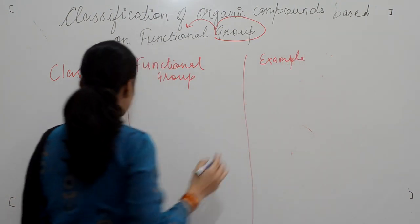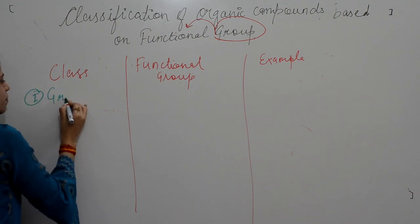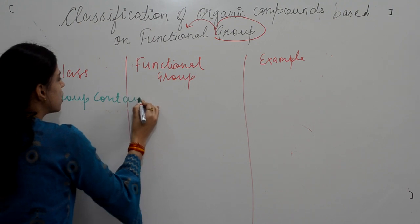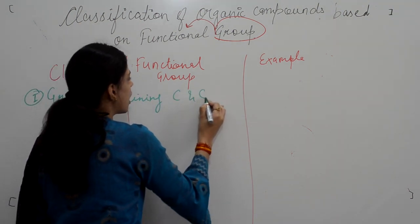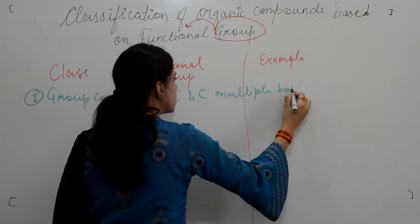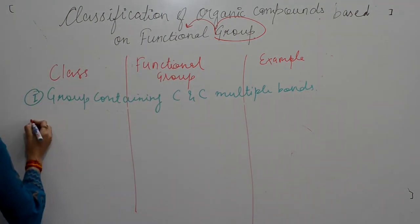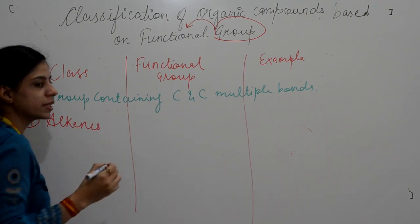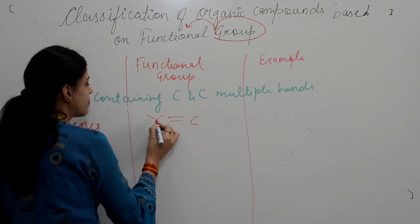We will be seeing class, functional group, and examples. The first category is groups containing carbon-carbon multiple bonds. The first in this group is alkenes — compounds in which a carbon-carbon double bond is present.